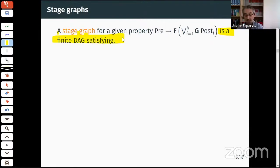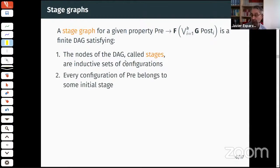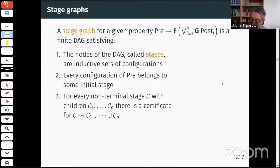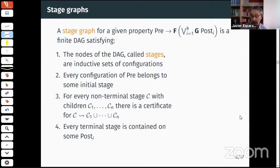A stage graph for a given property is a finite DAG satisfying: (1) nodes, called stages, are inductive sets of configurations; (2) every configuration of pre belongs to some initial stage; (3) if a node C has children C1 through Cn, there is a certificate for C leads to the union of C1,...,Cn — meaning with probability one we eventually get trapped in one of the children.